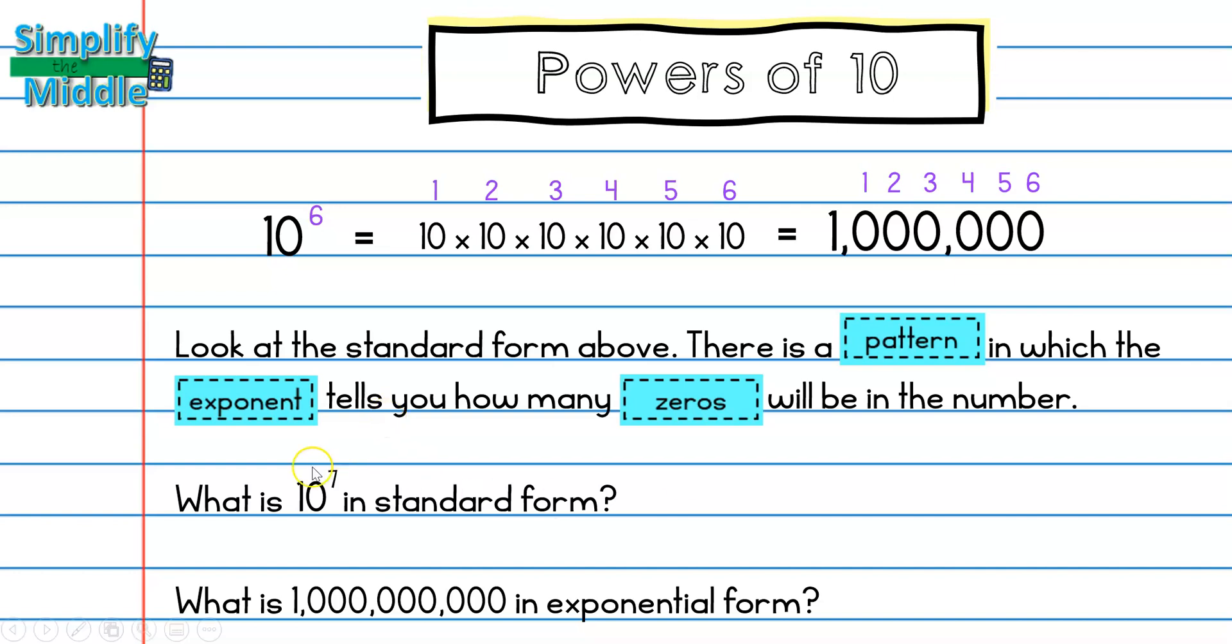What is 10 to the seventh power in standard form? I know there is a direct relationship between the exponent and the number of 0s in standard form. So I should be writing a 1 followed by seven 0s.